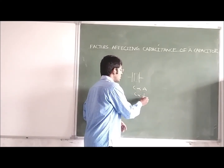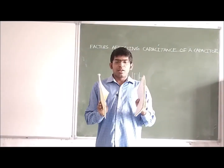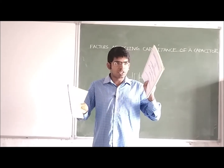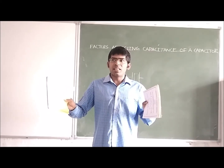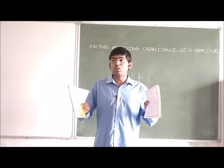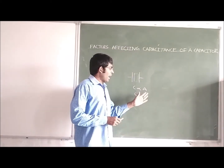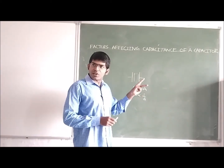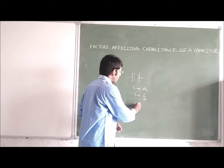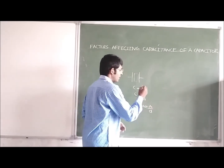The capacitance value is inversely proportional to the distance between the two plates. If I fix one plate and move the other, the capacitance changes because I am increasing the distance between the two plates. This is how area and distance between the two plates affect the capacitance of a capacitor, and from these two relations we arrive at C equals some constant times A divided by D.